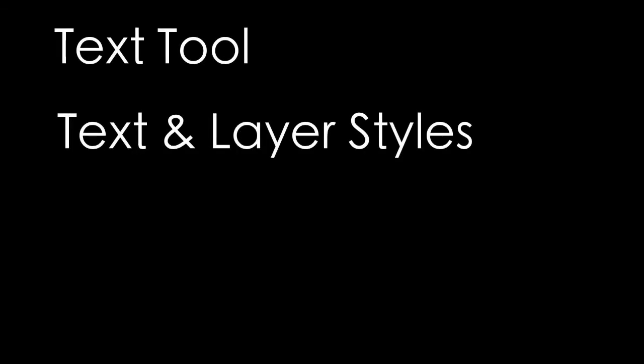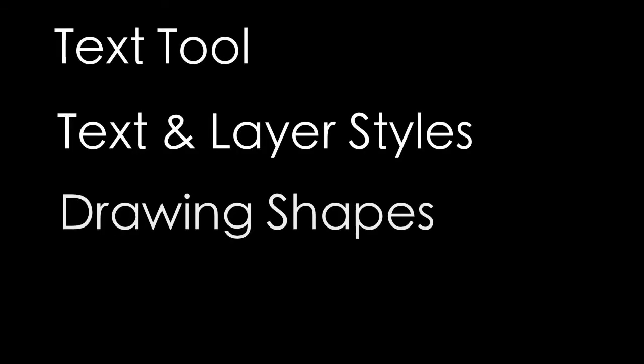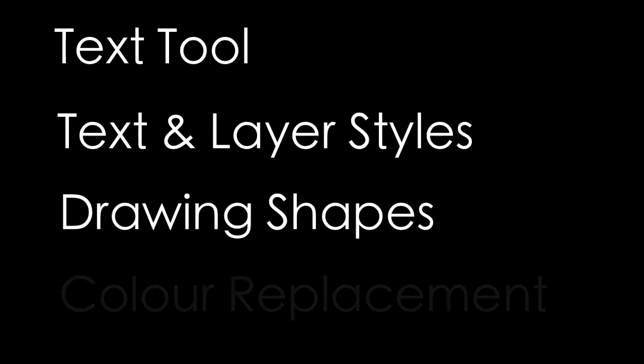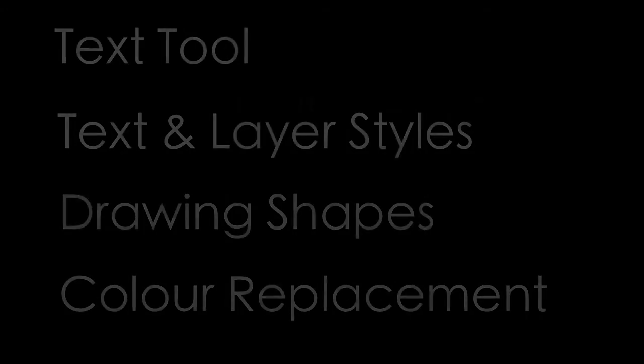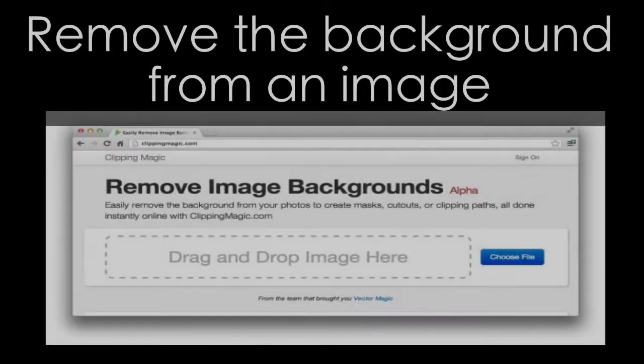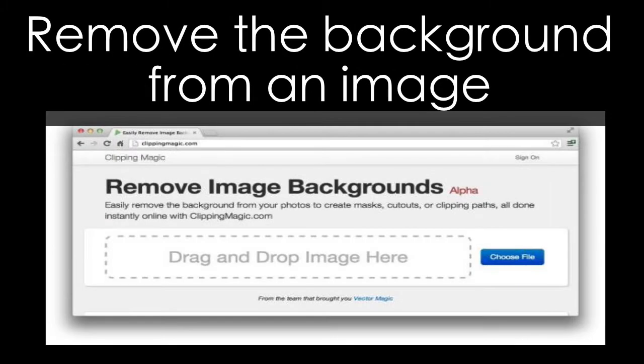Section 7 covers the text tool, text styles, drawing shapes and lines, the color replacement tool, and how to remove a background from an image to make it transparent.